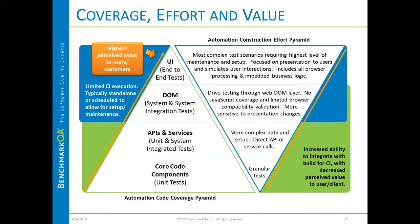The pyramid on the left shows the core components of an application — the pieces that your developers build. It's probably the largest portion of the application because it's the core business logic of what they're trying to achieve. On top of that, they build APIs and services. On top of that, in web applications, they build what's called a document object model — not necessarily what's presented, but it's very close to what's presented in the UI.